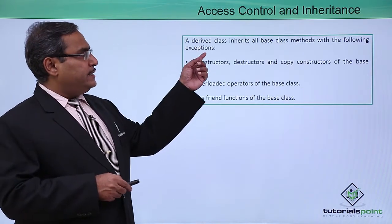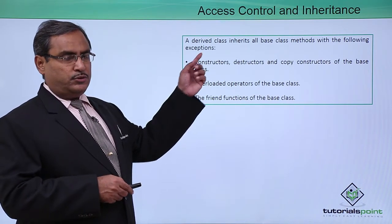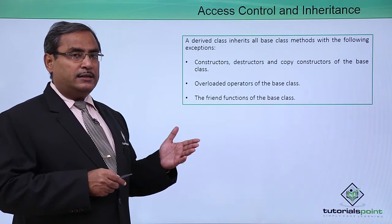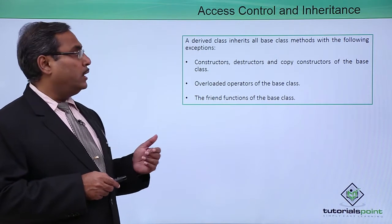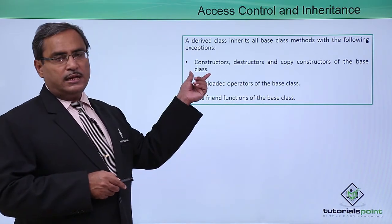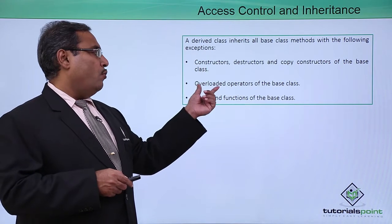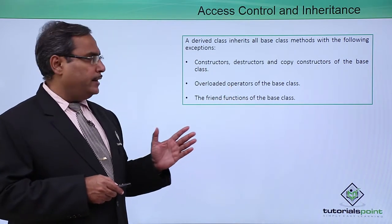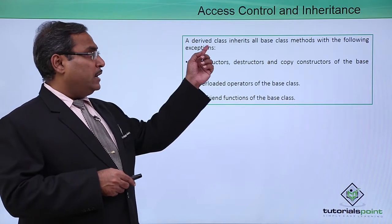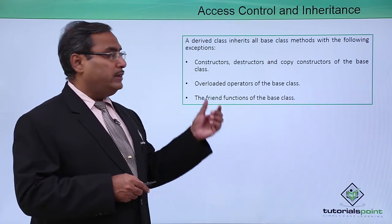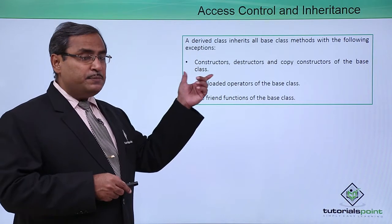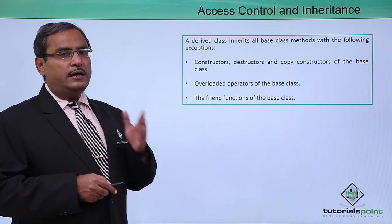A derived class inherits all base class methods with the following exceptions. There are some exceptions — those members, in spite of being under the public scope, will not be inherited by the derived class. Constructors, destructors, and copy constructors of the base class are not inheritable. Overloaded operators of the base class are not inheritable. The friend functions of the base class are not inheritable. These are the three exceptions with which you can say these members are not inheritable from the base class to the derived class.